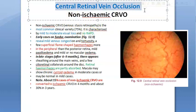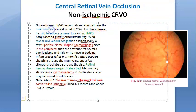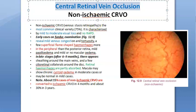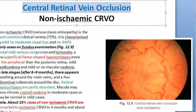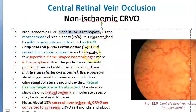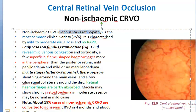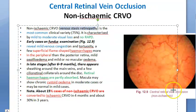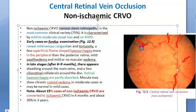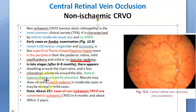Coming to central retinal vein occlusion — there are two types: non-ischemic and ischemic. Non-ischemic is also called venous stasis retinopathy. The veins are very tortuous, showing stasis of blood. So you see tortuosity, mild venous congestion in the beginning, and superficial flame-shaped hemorrhages in the periphery initially. Initially there is no macular edema.